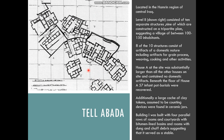In addition to the burials inside of Building A, there was also a large cache of tokens — small stones that are thought to be counting devices — found inside of ceramic jars. Similar to stamp seals as a way to keep track of goods and resources within the community, these tokens may have functioned in the same way.